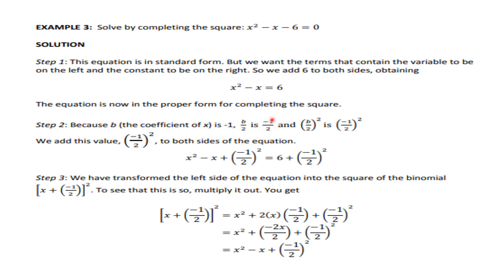In step number 2, you have to form (b/2) whole square, where the coefficient of x equals b. So b is equal to minus 1, b/2 is equal to minus 1/2, and (b/2) whole square is (minus 1/2) whole square. Add this to both sides, so you will have x squared minus x plus (minus 1/2) whole square equals 6 plus (minus 1/2) whole square.